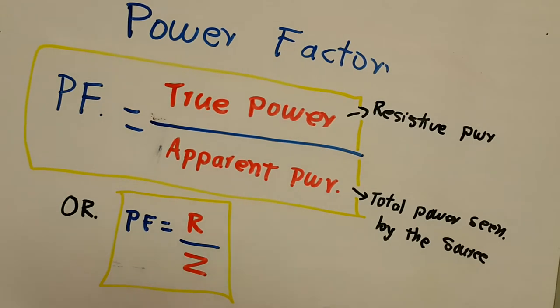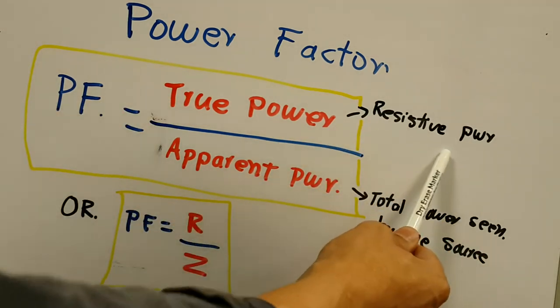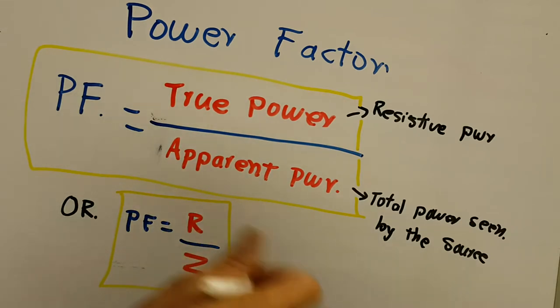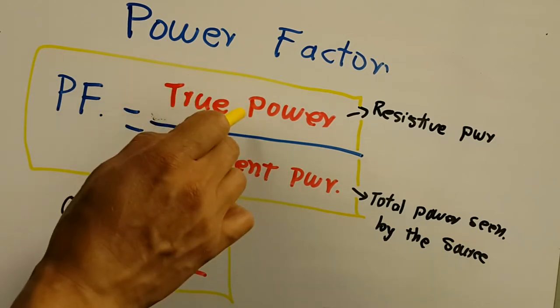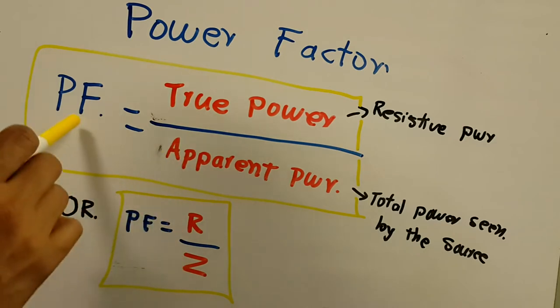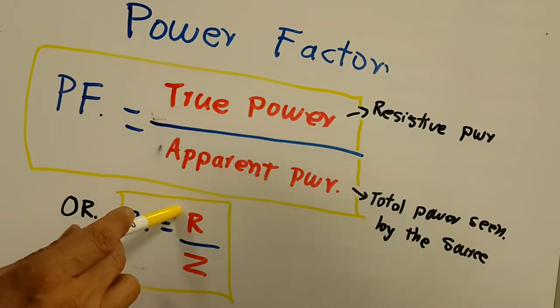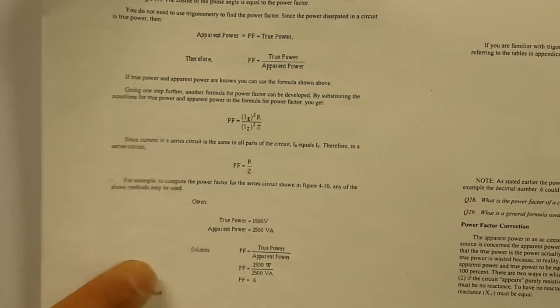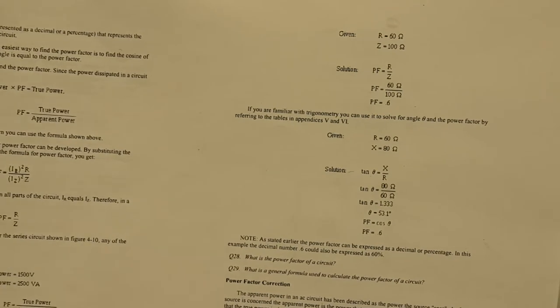Now we talk about power factor. Power factor is true power — the power actually used by the resistance — divided by apparent power, which is the total power seen by the source. Reactive power is not placed in the denominator separately because apparent power already combines true power and reactive power. Another way to calculate power factor is to divide the resistance of the circuit by the impedance. Page 423 of the NIST modules has further calculations and a more in-depth explanation, but the key concept is that power factor relates to the efficiency of a system.